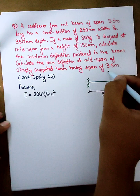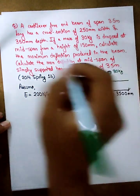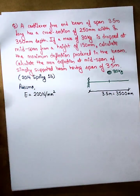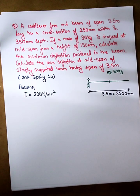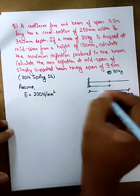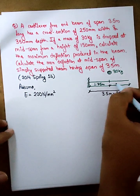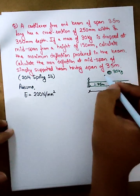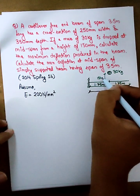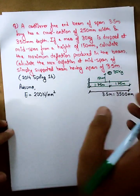The mass is 30 kg. It is dropped at mid-span. The full span is 3.5 meters, so the mid-span distance is 1.75 meters. The drop height is 150 mm.